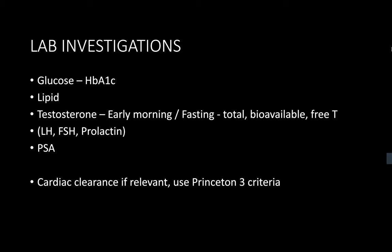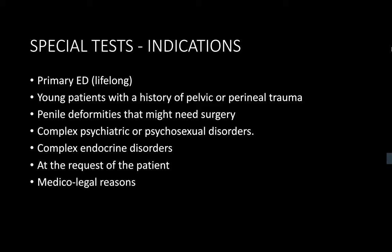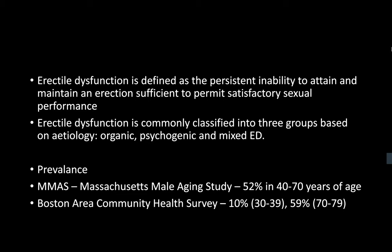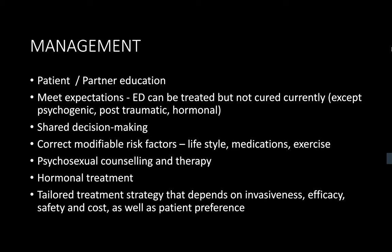We will discuss more on testosterone when we cover late-onset hypogonadism in another session. What are the risk factors for developing erectile dysfunction? These include coexisting cardiovascular or peripheral vascular disease, poorly controlled type 2 diabetes, previous pelvic cancer radiotherapy, and medications including antihypertensives, cardiac medications such as amiodarone or statins, anti-epileptics such as carbamazepine and phenytoin, and anti-depressants. Also underlying endocrine disorders such as hypogonadism and hyper- or hypothyroidism, and drug use as well.